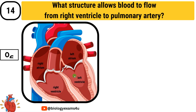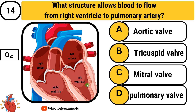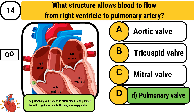Question number 14: What structure allows blood to flow from the right ventricle to the pulmonary artery? Option A: aortic valve. Option B: tricuspid valve. Option C: mitral valve. Option D: pulmonary valve. The answer is the pulmonary valve. This valve opens to allow blood to be pumped from the right ventricle to the lungs for oxygenation.